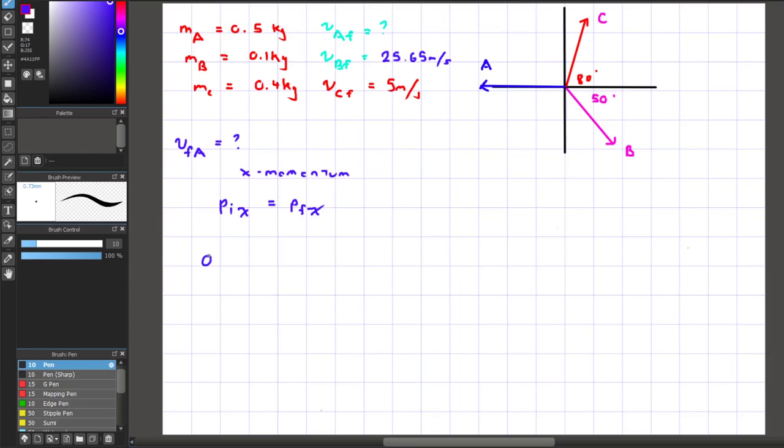No pieces are moving before the explosion, so the initial momentum is zero. The final momentum is represented by mass A times final velocity A, plus mass B times final velocity B, plus mass C times final velocity C. Nothing is getting crossed out to zero, as all pieces are moving in the x-direction. We'll also have to use the cosine function to focus exclusively on the x-direction.